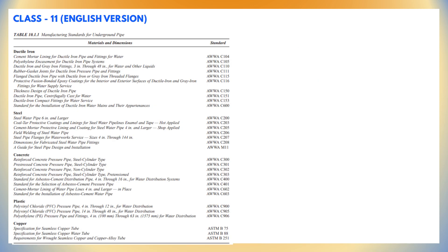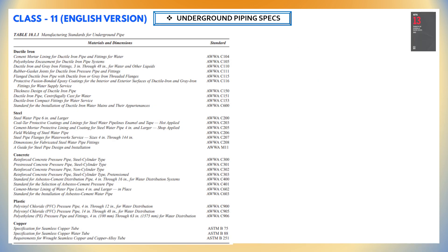In this slide you can see the manufacturing standards for underground pipe. Ductile iron pipes, steel pipes, concrete pipes, plastic pipes, and copper pipes can also be used for underground piping. However, they have to be in accordance with the standards mentioned in Table 10.1.1.